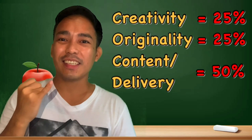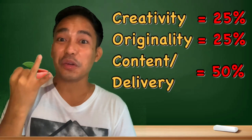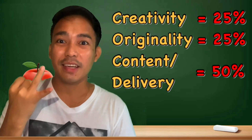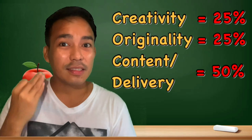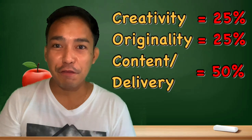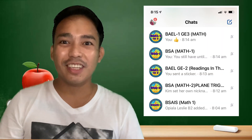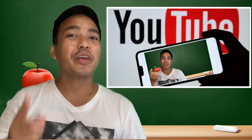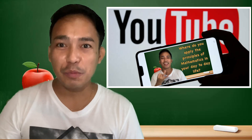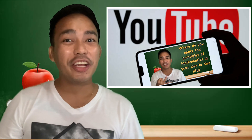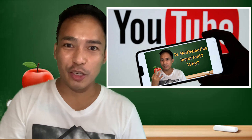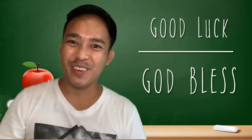Why or why not? You will be graded on these three criteria. First, creativity, 25%. Next is originality, 25%. And the third one is the content or the delivery, 50%. You can send the video directly to our group chat or you can create your own YouTube channel, upload your video and send the link in our group chat. Best of luck!